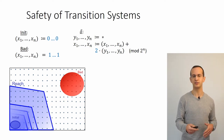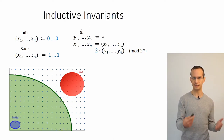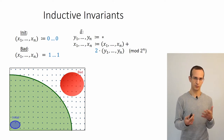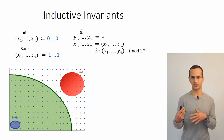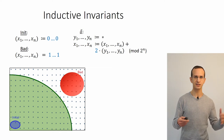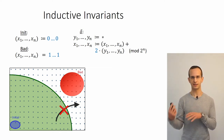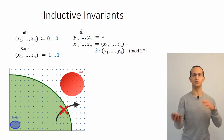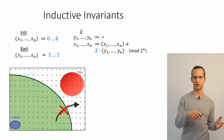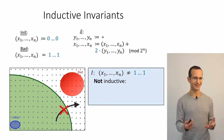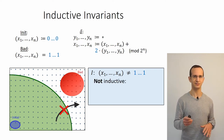We want to prove safety by finding an inductive invariant, which is a set of states that includes all the initial states, excludes all the bad states, and is closed under transitions of the system. There's no transition from inside the invariant to outside the invariant.